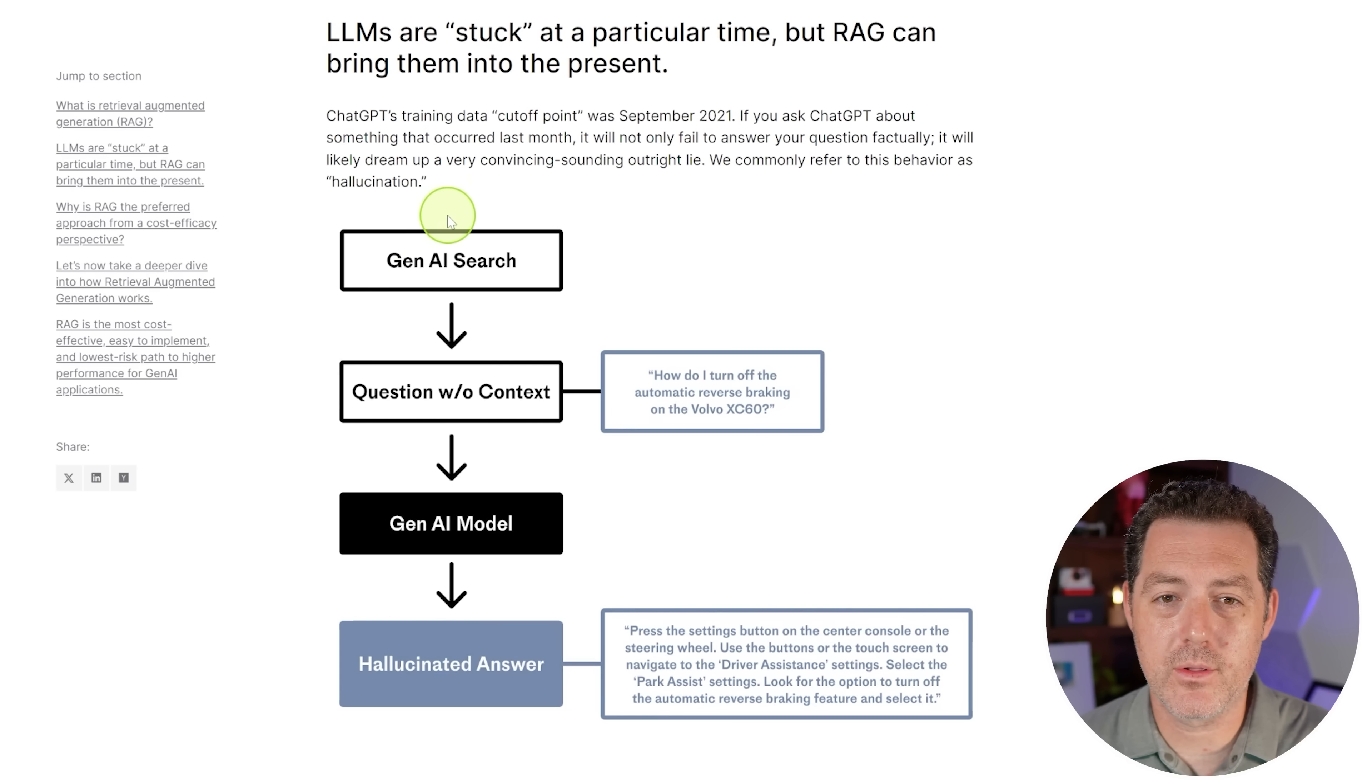So let me give you another really specific example. So here's a workflow without RAG. And this is from the Pinecone Learning documentation. So we have a generative AI search, just asking a question to a large language model. And here's the question: how do I turn off the automatic reverse braking on the Volvo XC60? Now, that question gets prompted to the model, let's say ChatGPT. And since it doesn't have that exact information, it's going to hallucinate, meaning it's going to make something up. So press the settings button on the center console or the steering wheel, use the buttons of the touchscreen to navigate, and so on. But this isn't actually what is happening. So there is a much better way of doing this.